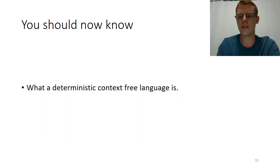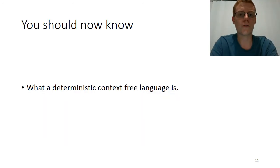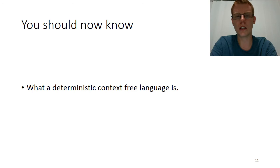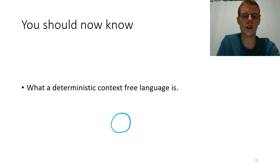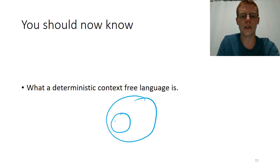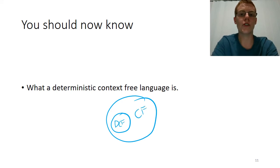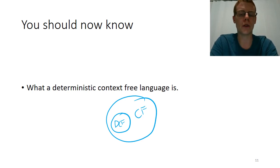So, what we've talked about in this video is what a deterministic context-free language is, briefly mentioned some of its closure properties — which will be dealt with more thoroughly in the tutorials — and the fact that the deterministic context-free languages are a proper subset of the context-free languages. We proved that using an example of a language which was context-free but not deterministic context-free.